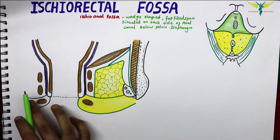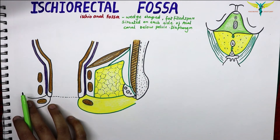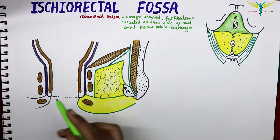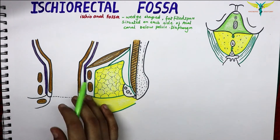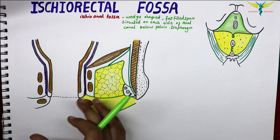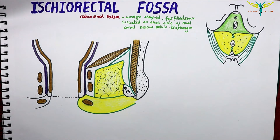The two fossae communicate with each other behind the anal canal. They help in the dilatation of the anal canal during the process of defecation.